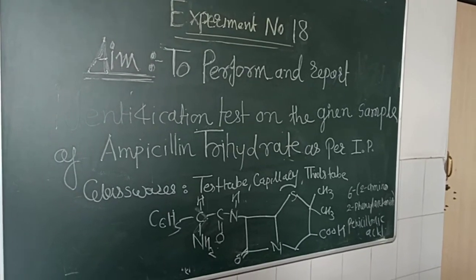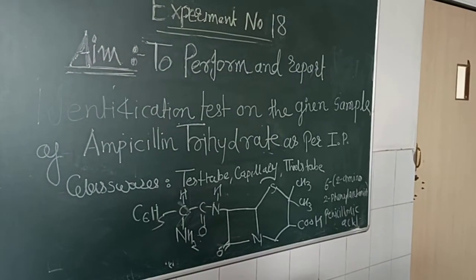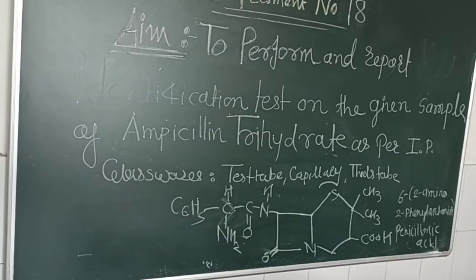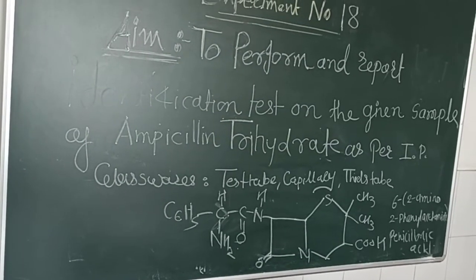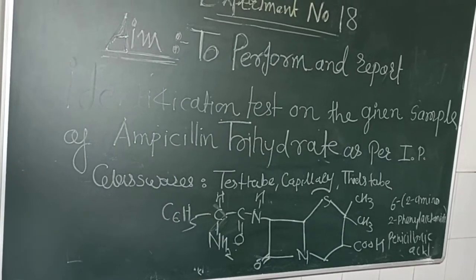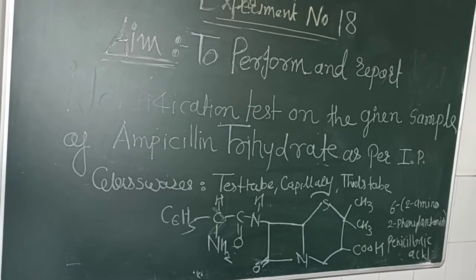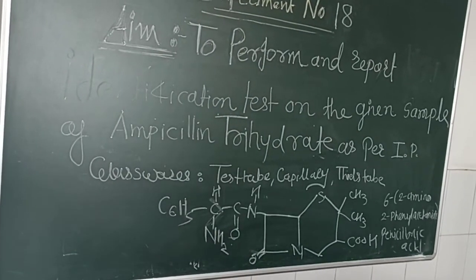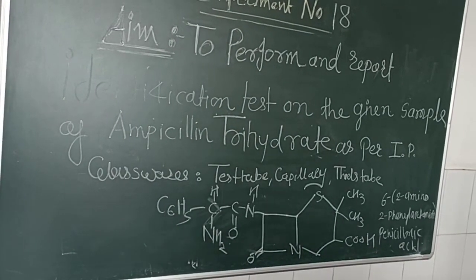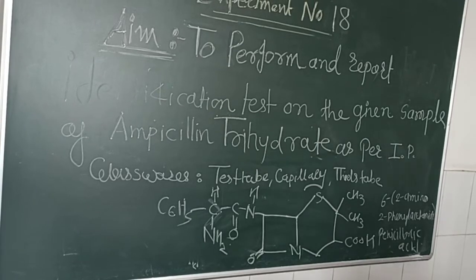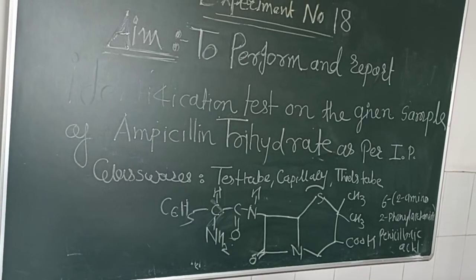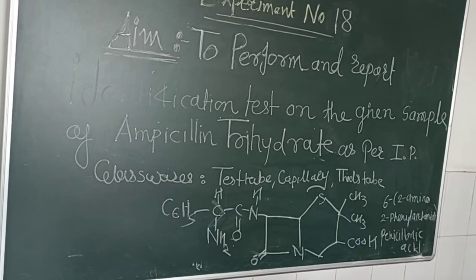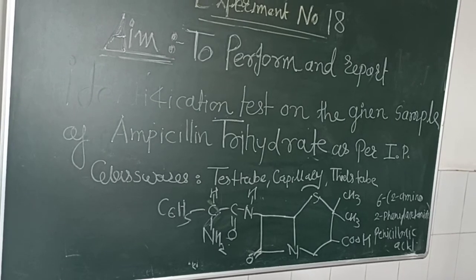See the structure of ampicillin trihydrate. The steps involved in identification are: first we have to perform the solubility test, then we proceed to the identification test as per Indian Pharmacopoeia, and then we will see whether it complies or not complies with the test.